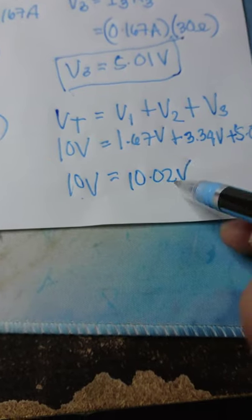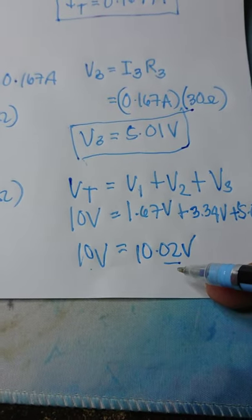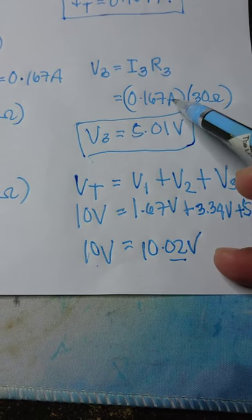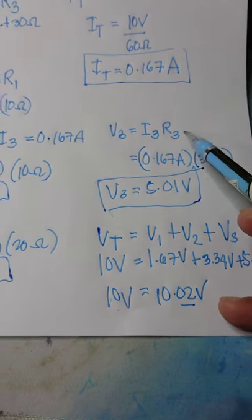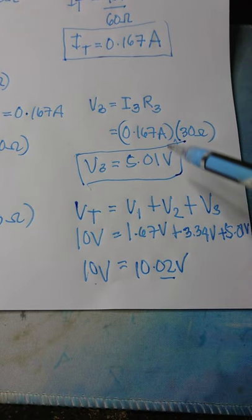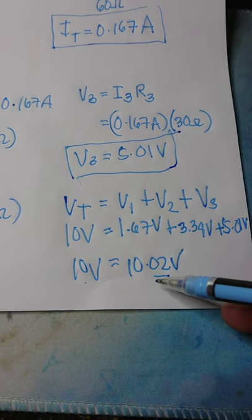As you can see, there is a slight difference of 0.02. It is because of the rounding off of decimal for the current that we had earlier. So therefore, there's just a slight difference, but it's okay.